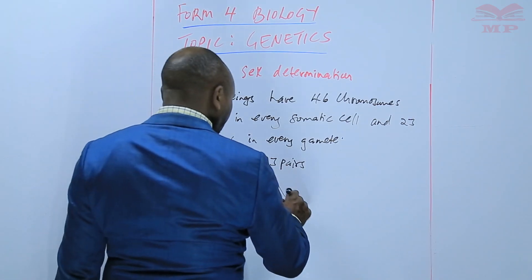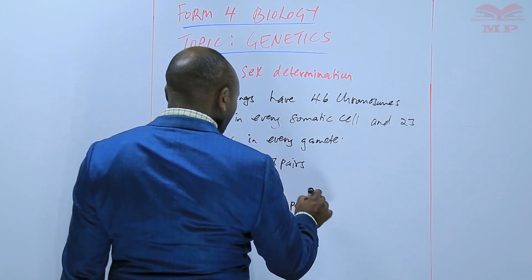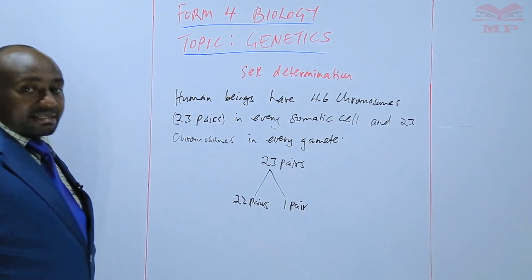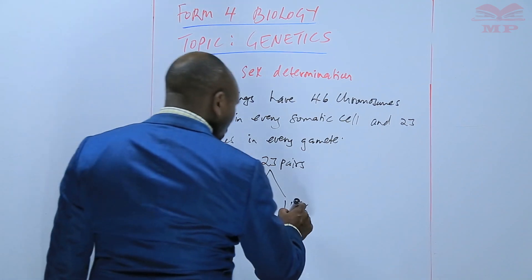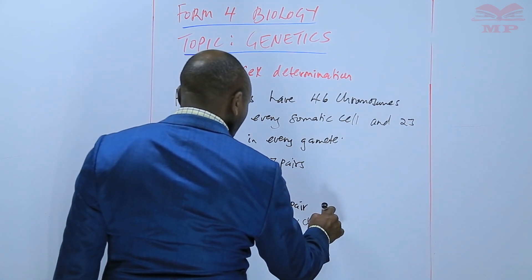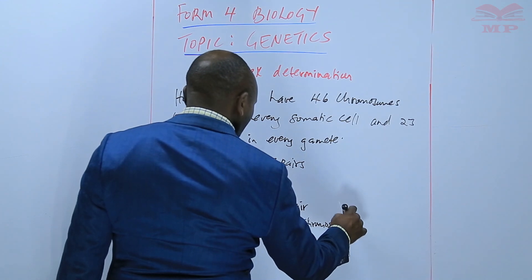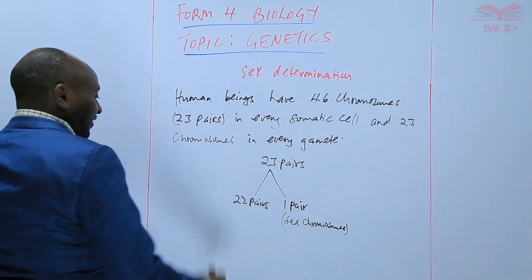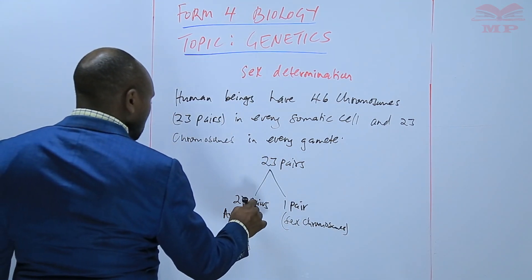But there is one pair, and this pair is the one that determines sex. This pair is what we refer to as the sex chromosome. And the 22 pairs we refer to as autosomes.